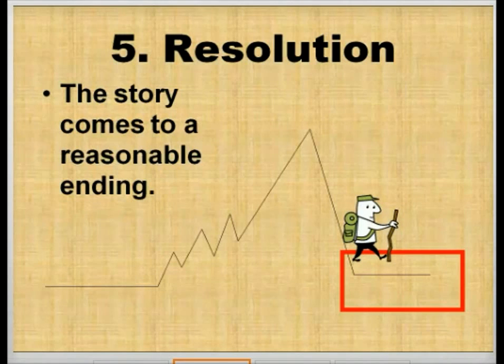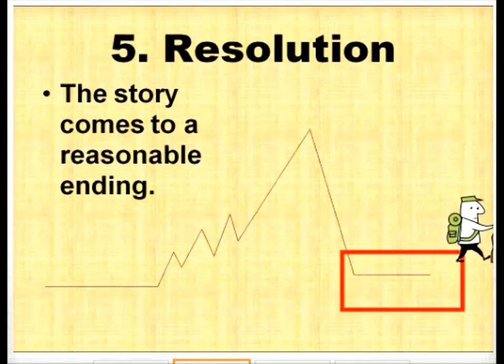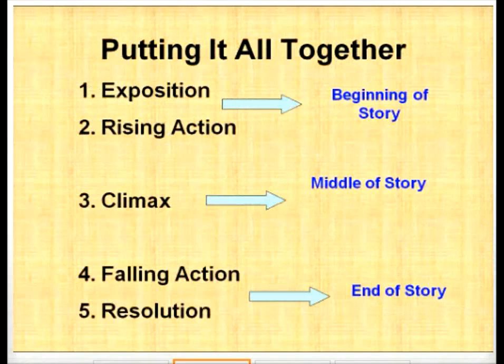We discussed the climax, which is a conflict. Part of today's lesson is going to be talking about different types of conflict that different characters can face. But before we do that, we're going to put it all together. You have exposition and rising action together, which are the beginning of the story. The middle of the story is the climax. And the end of the story contains the falling action and the resolution.